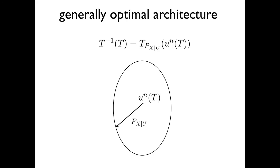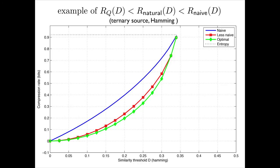The bottom line: you don't need to go too far. The architecture is understood, and the quantization cells are conditional typicality balls, as in rate-distortion theory. In general, you can do strictly better than the natural architecture — there are examples, such as a ternary source, where the optimal scheme uses quantization under a distortion criterion other than the one used to measure similarity.